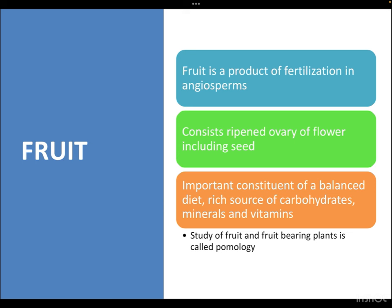Botanically, a fruit is a product of fertilization of angiosperms — the flower-bearing plants. Angiosperms consist of the ripened ovary of a flower including seeds. When this ovary, which is the female part of the flower, ripens up, it forms the fruit, and the ovules present inside develop to form seeds. Fruits are an important constituent of a balanced diet and a rich source of carbohydrates, minerals, and vitamins. The study of fruit and fruit-bearing plants is known as pomology.